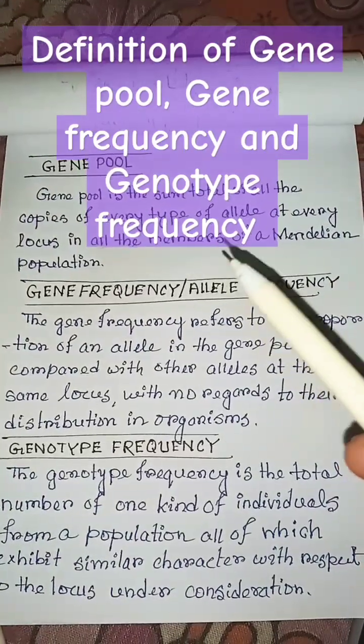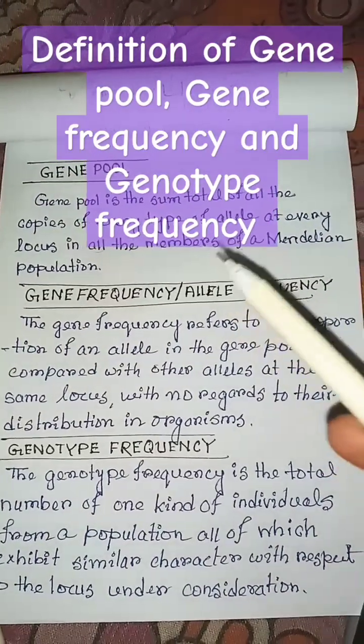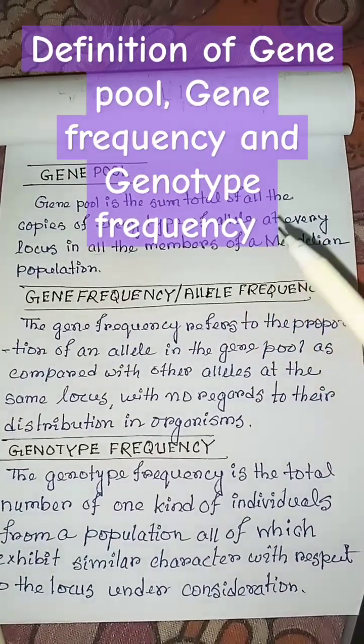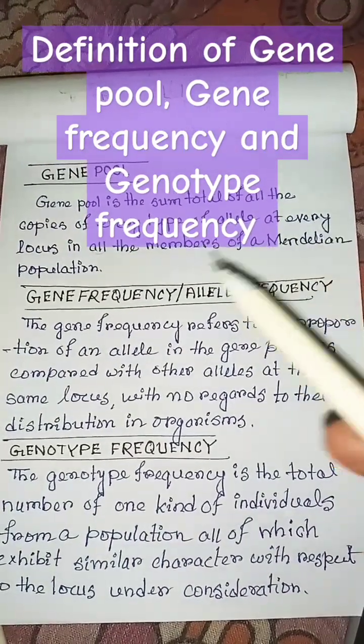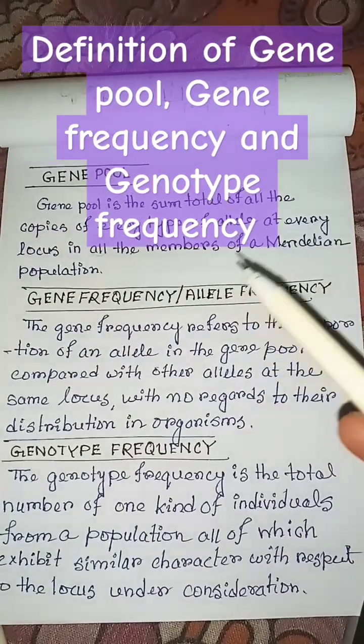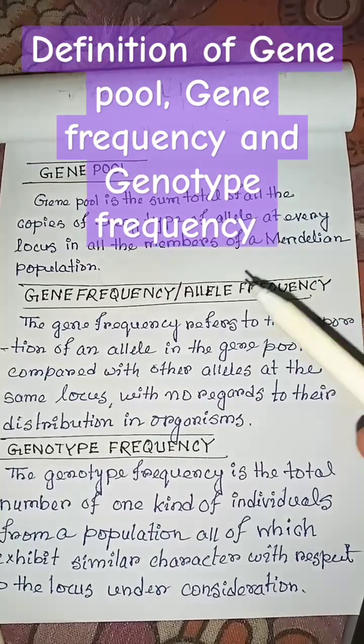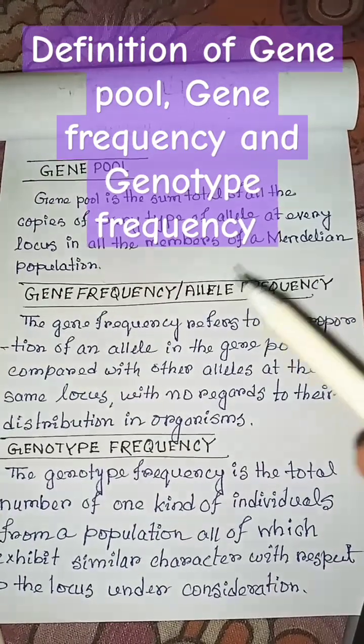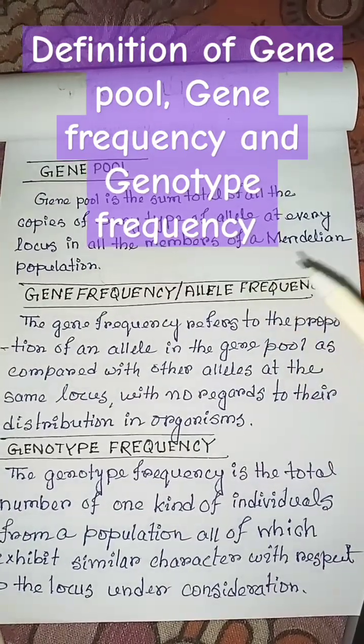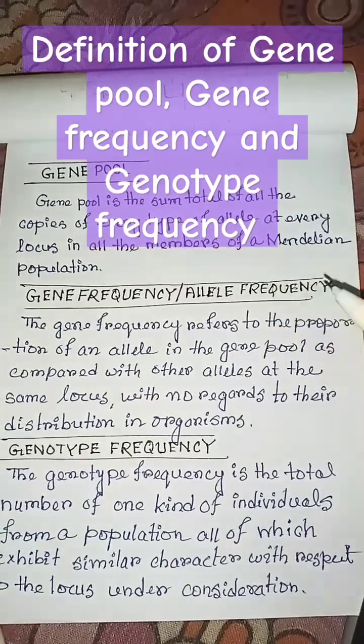What is gene pool? Gene pool is the sum total of all the copies of every type of allele at every locus in all the members of a Mendelian population.